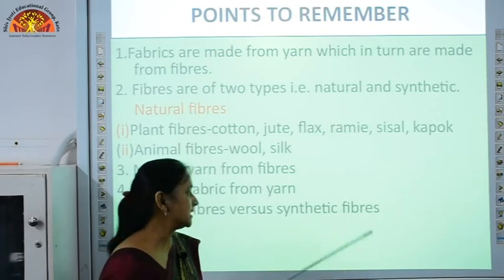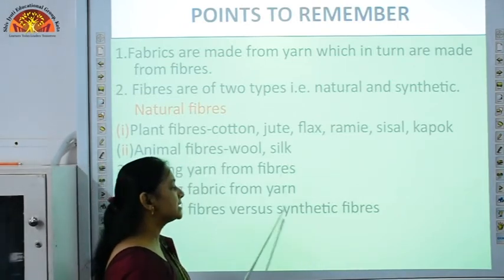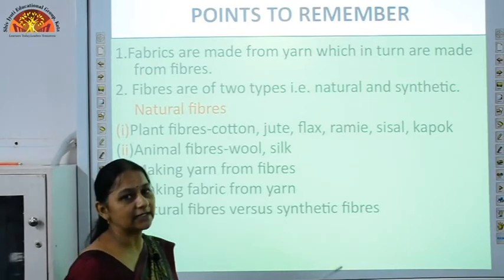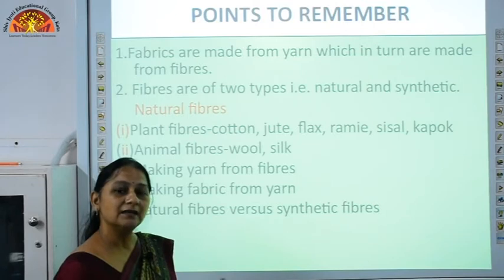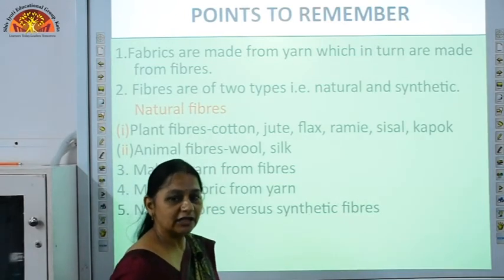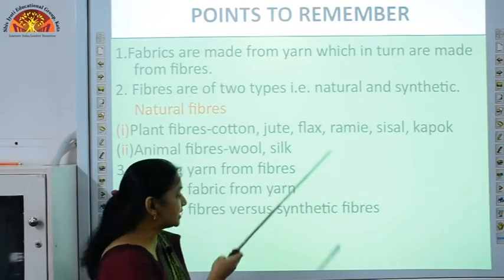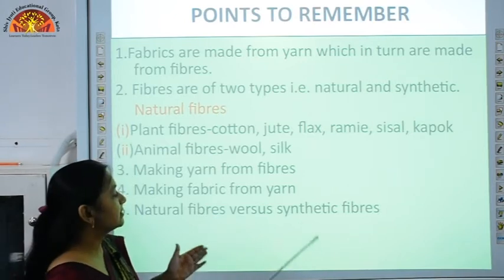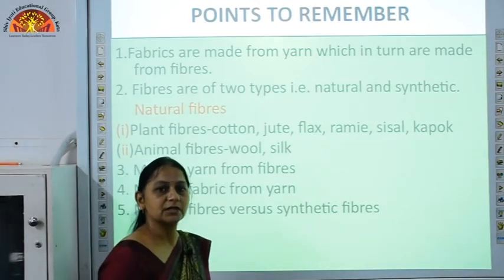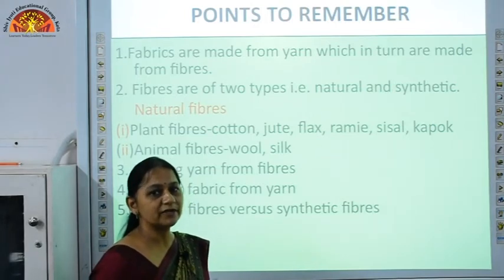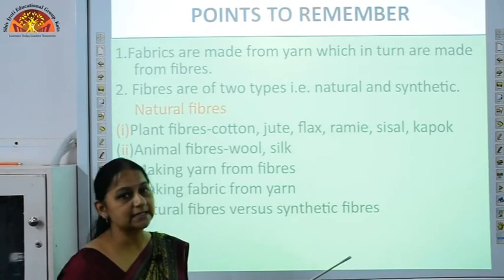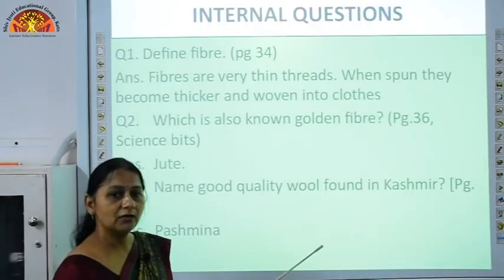Fabrics made by the process of knitting include sweaters and mufflers. Then we have natural fibers versus synthetic fibers, including the advantages and disadvantages of each. Natural fibers are good absorbers of sweat and keep us warm during winter. Synthetic fibers are wrinkle-free and dry easily, but they also have disadvantages. Both synthetic and natural fibers are important. This was the explanation of the chapter — a descriptive explanation has been given in the previous video, so you need to go through that also. Now we are going to discuss the internal questions of this chapter.